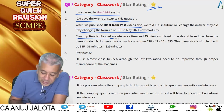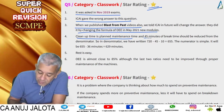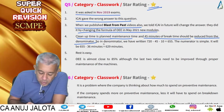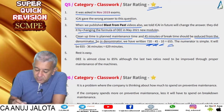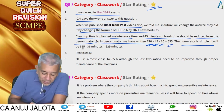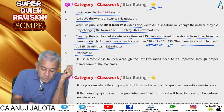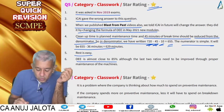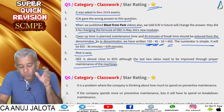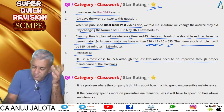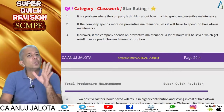Cleanup time is planned maintenance time. In the denominator: 720 less 45 less 10 = 665. The numerator is 665 minus 36 minutes of downtime. OEE comes close to 85%, though the last two ratios need improvement through proper machine maintenance. Doing two or three OEE questions will be more than enough practice.